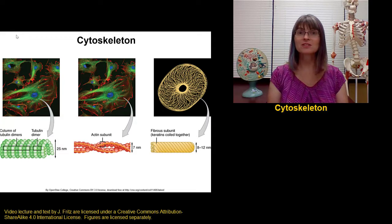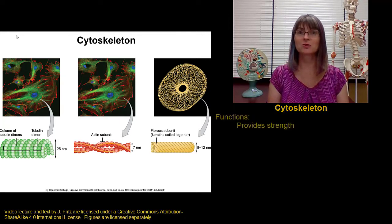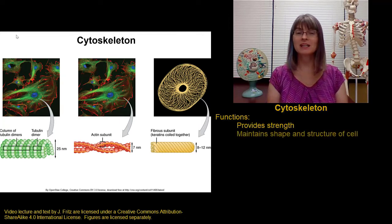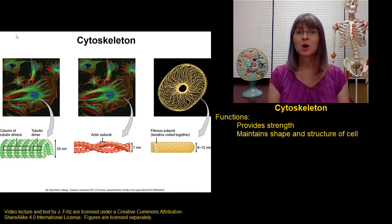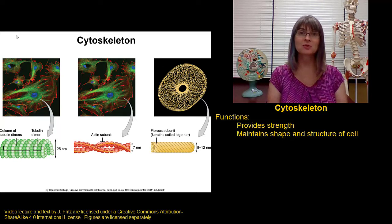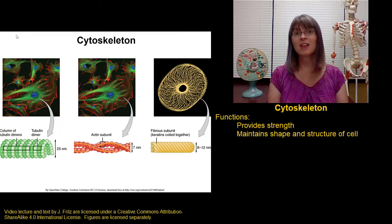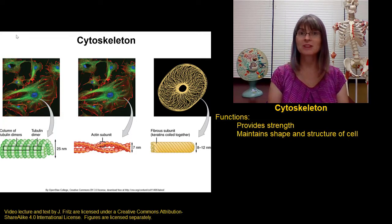The cytoskeleton does for the cell a lot of the same things that our skeleton does for us. First, it helps to provide strength to the cell. Second, it's important for maintaining the shape and the structure of the cell. Without a cytoskeleton we wouldn't have a way for any of our cells to maintain a unique shape that it may need to carry out a specific function and it would be a lot harder to organize the components within the cell.